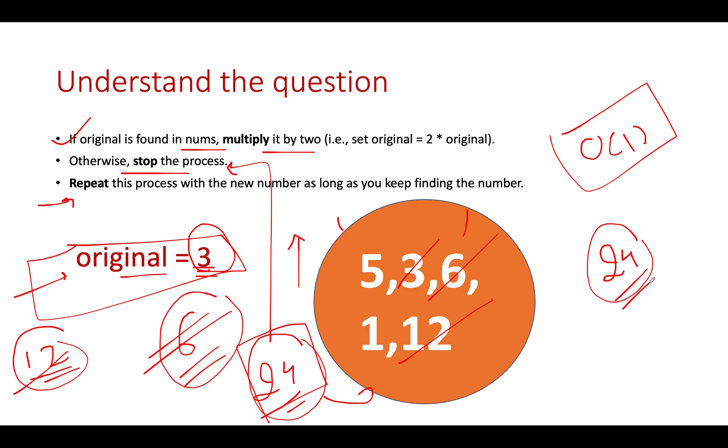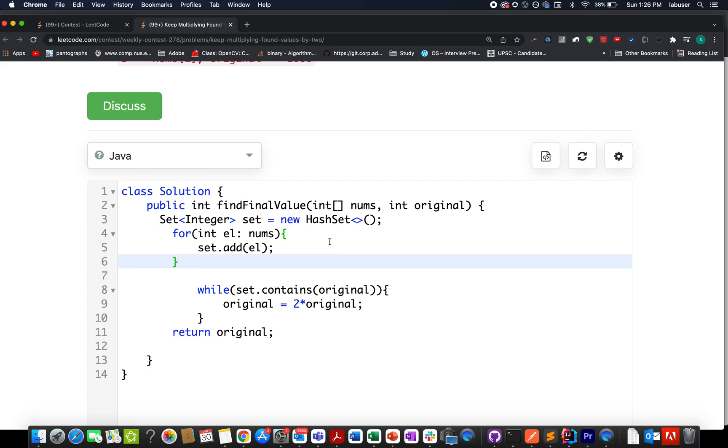Now let's quickly walk through the coding section and conclude this approach. As stated in the presentation, I have created a hash set and I keep on adding all the elements that are present in the input array into the set. I have written a while loop, while set.contains original, I keep on updating original by 2 and as soon as this condition is broken or violated, I return the original value that has been finally set.